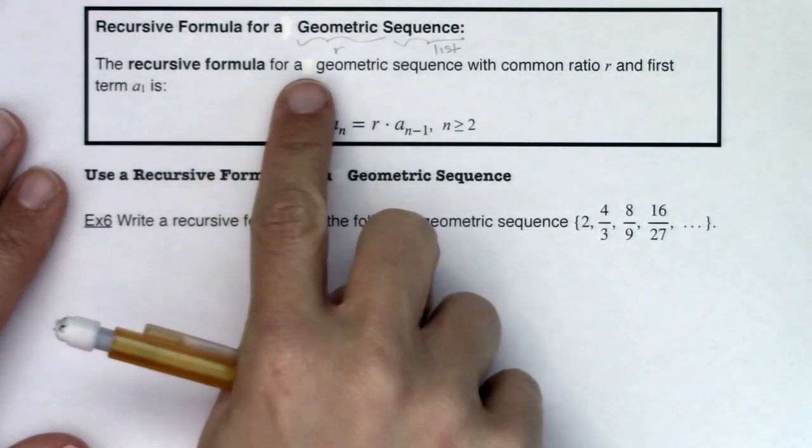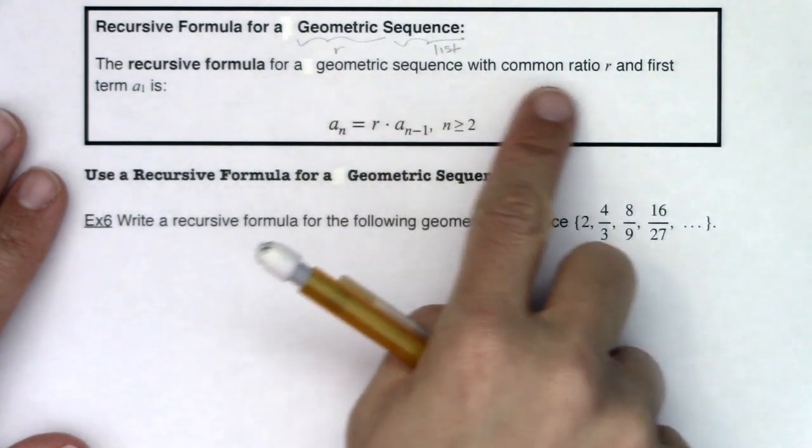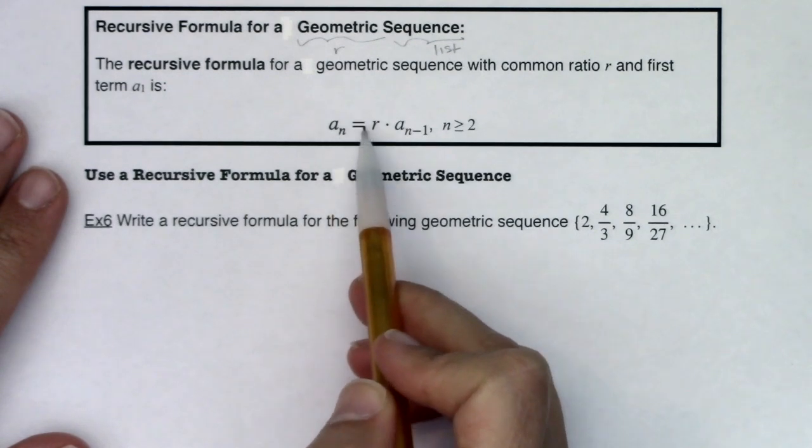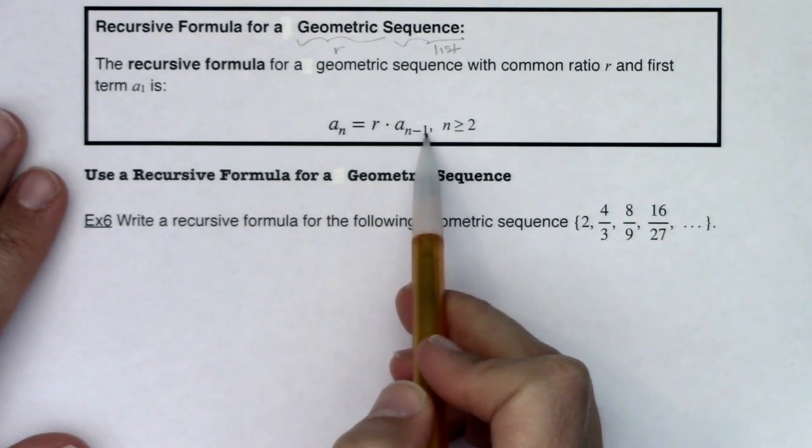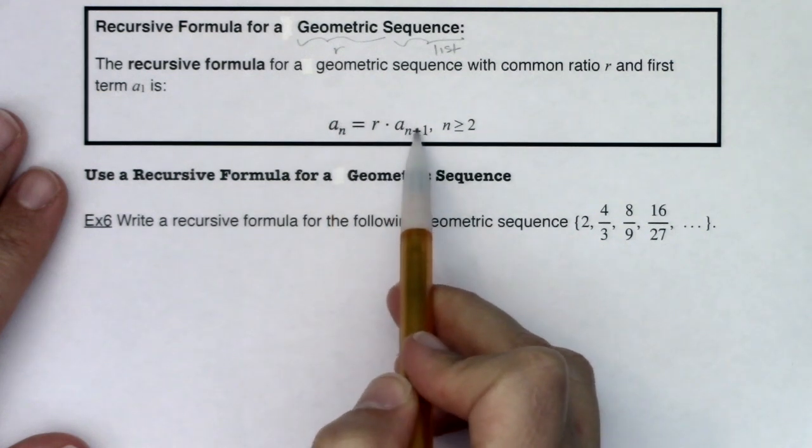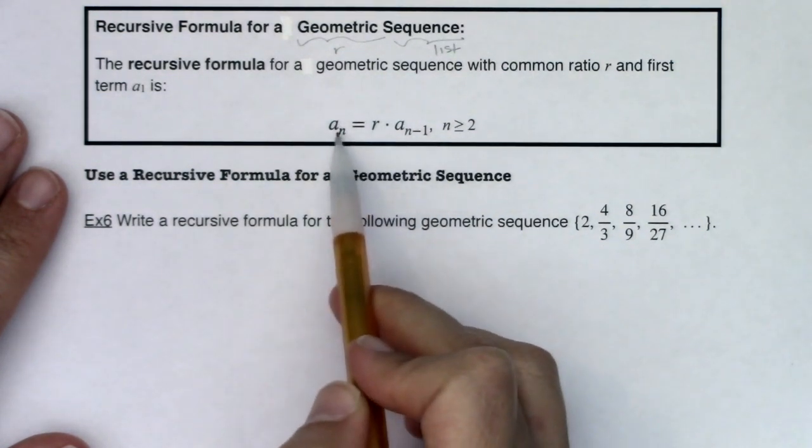The recursive formula for a geometric sequence with common ratio r and first term a sub 1 is a sub n equals r times a sub n minus 1. That means your current term is the previous term times r. That's all that's trying to say.